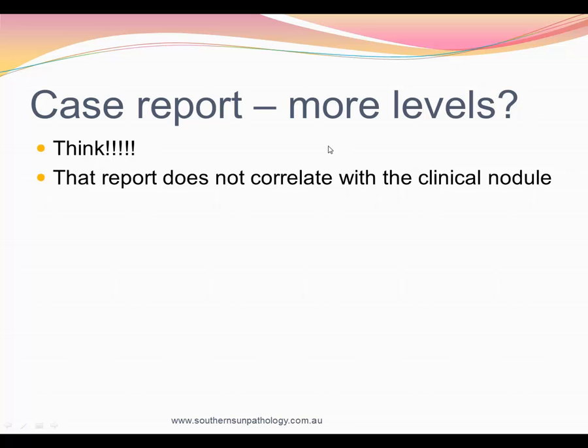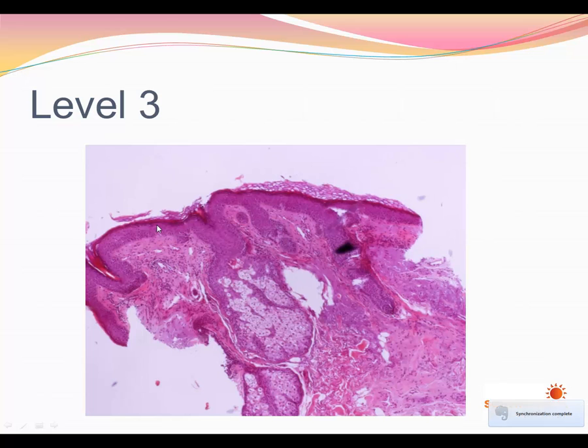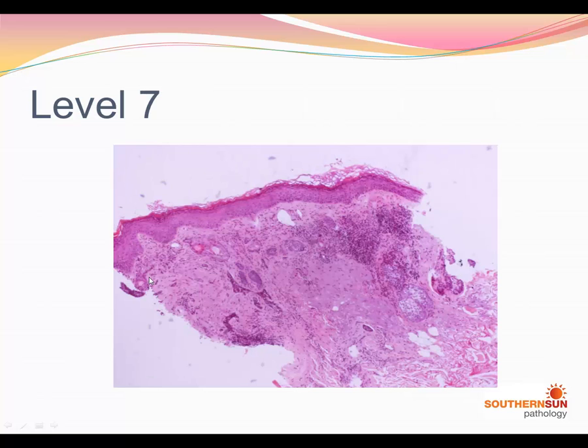This is what level one looked like — the epidermis, sun-damaged dermis, a bit of sun damage and solar keratosis on the surface, and a bit of inflammatory infiltrate. Level three looked very similar, and this is essentially what the pathologist reported on. But because there was discrepancy between the clinical and pathological diagnosis, I asked for deeper levels. Level five showed a similar thing, but in level six we began to see little strands of basaloid epithelium infiltrating within the dermis, highly suspicious of morphoeic basal cell carcinoma. In a slightly deeper level, you can see lots more strands of infiltrating BCC throughout the dermis.